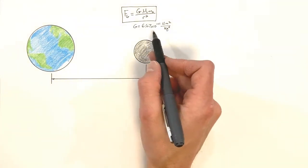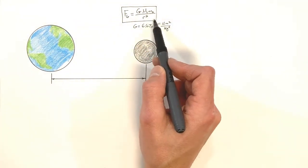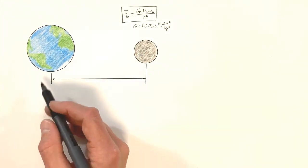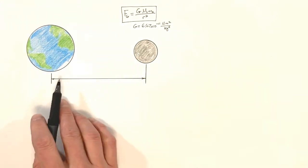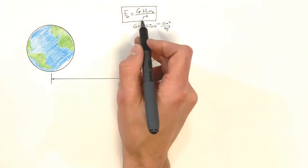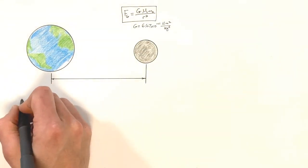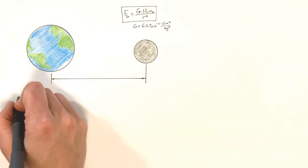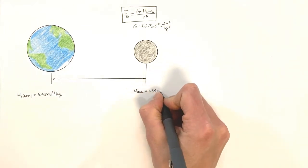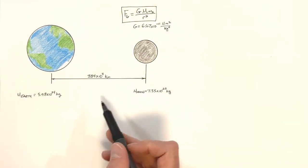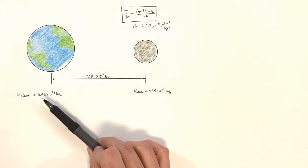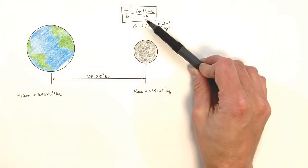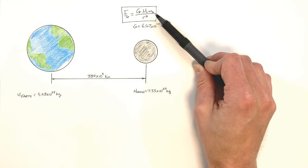Today I just want to look at this law of universal gravitation and talk about how to apply it. To apply this law, I want to look at the moon and the earth and the force between them. To do that, we're going to need to know a few things — the masses of each of these objects, because in the equation we have the mass of one object times the mass of the other. We've got the mass of the earth, the mass of the moon, and the distance between them.